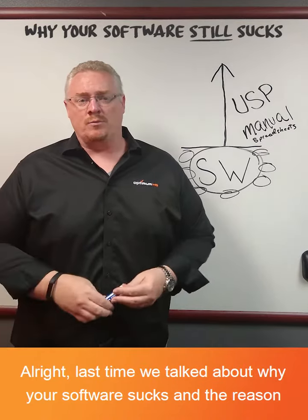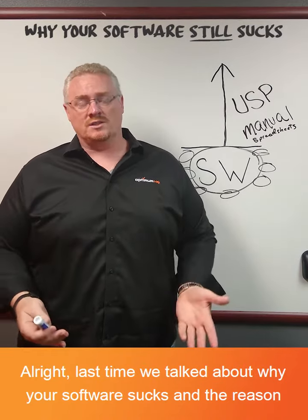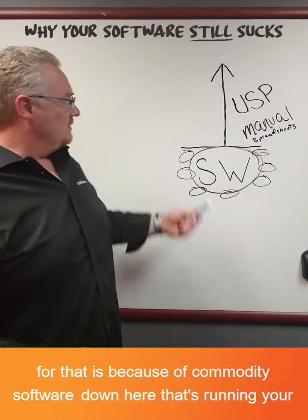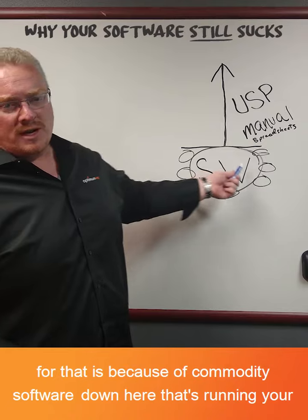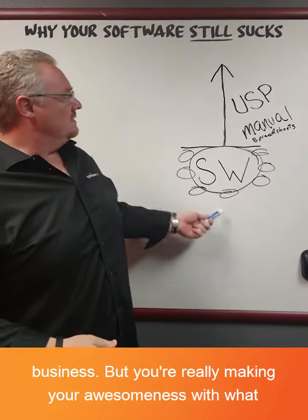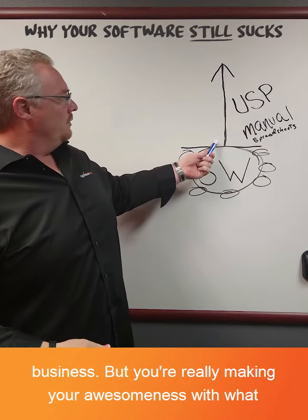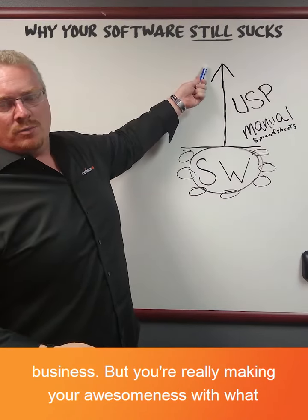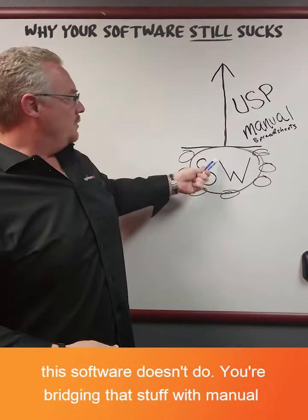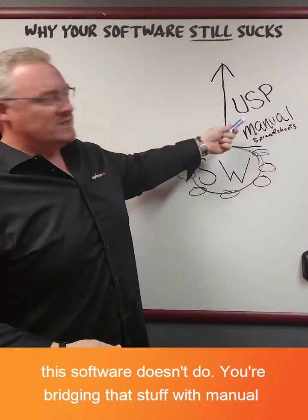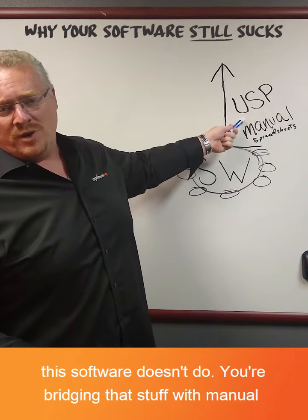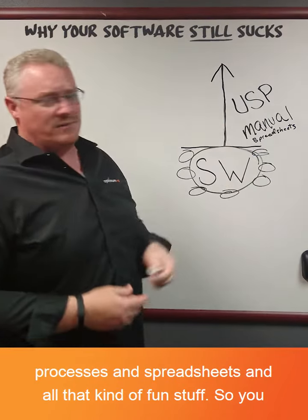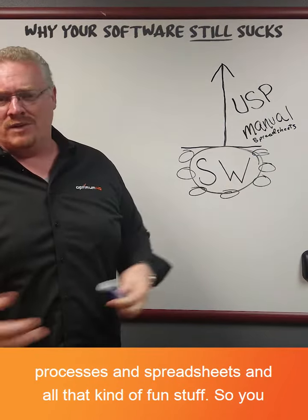Last time we talked about why your software sucks. The reason is that you've got all this commodity software running your business, but you're really making your uniqueness — your awesomeness — with what this software doesn't do. You're bridging that gap with manual processes, spreadsheets, and all that kind of fun stuff.